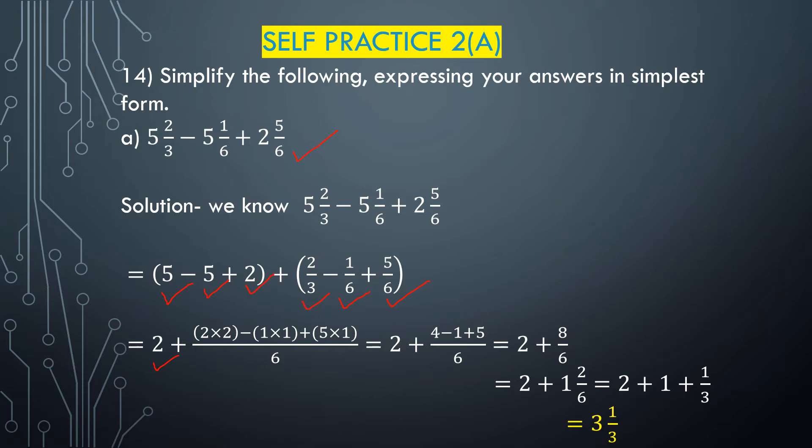Now we have to add the fractional parts: 2/3 minus 1/6 plus 5/6. First we have to find the LCM of the denominators. The prime factorization of 6 is 3 multiplied by 2, so the LCM of 3, 6, and 6 is 3 multiplied by 2, which equals 6.